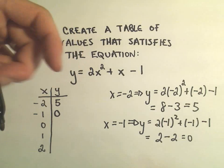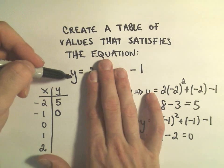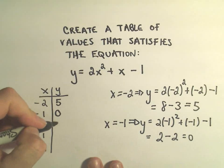Plugging 0 in will be easy. The first term will turn into 0, the second term will also turn into a 0, and we'll just be left with y equals negative 1.